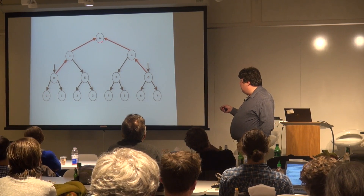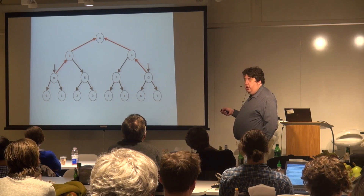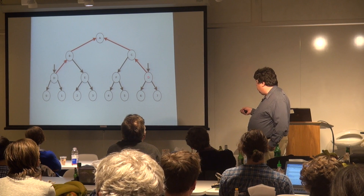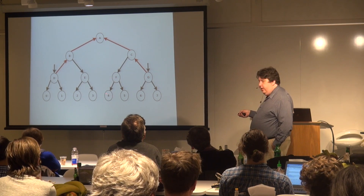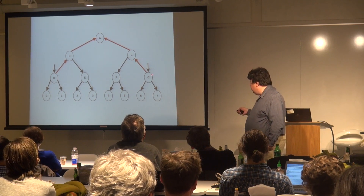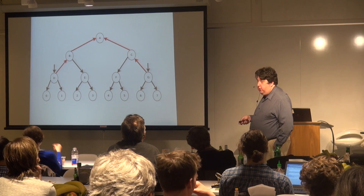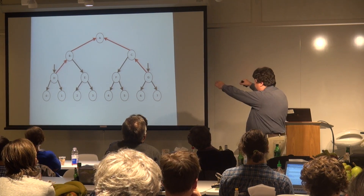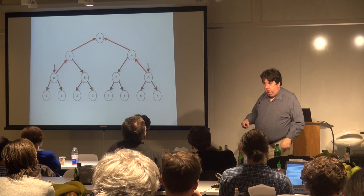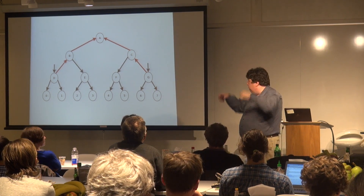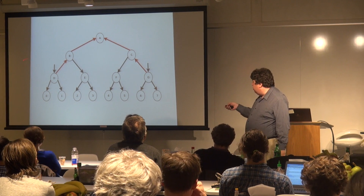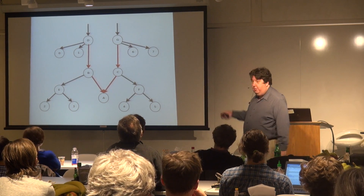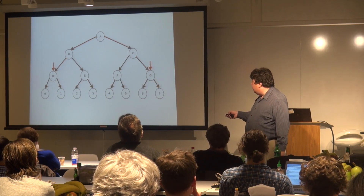To get to the rest of the tree, we need to reverse the spines of the outermost spines — the pointers need to go up instead of down. This allows us to get to elements from the bottom. Then I grab the data structure by nodes D and G, swing them up into the middle, and have the rest fall down. It's exactly the same data structure — all the same nodes, same edges, same directions — just drawn differently, with D and G pulled up to the top.